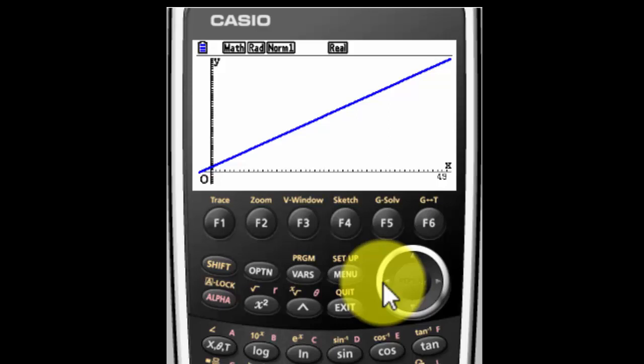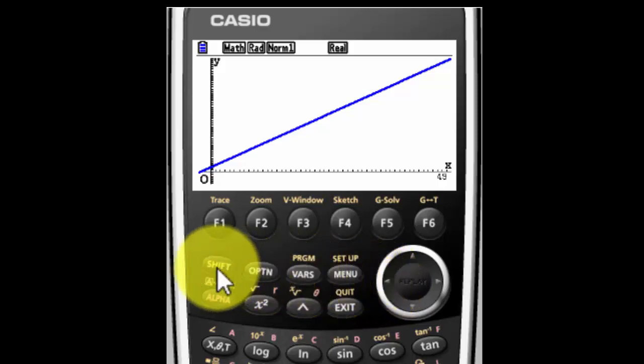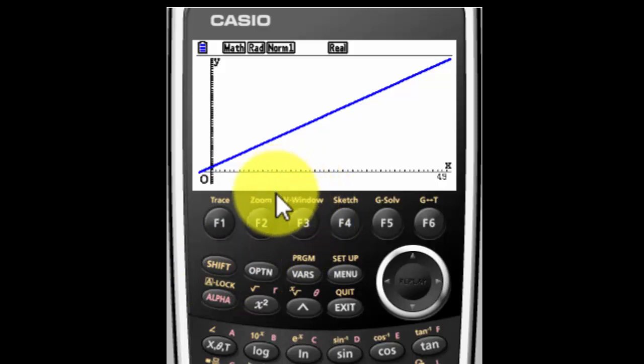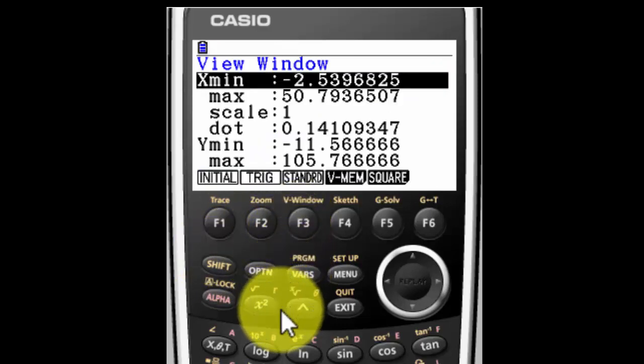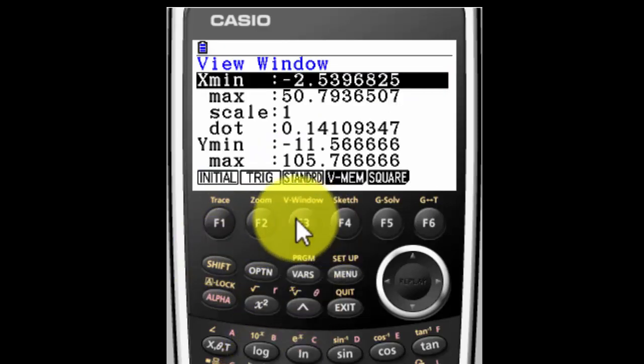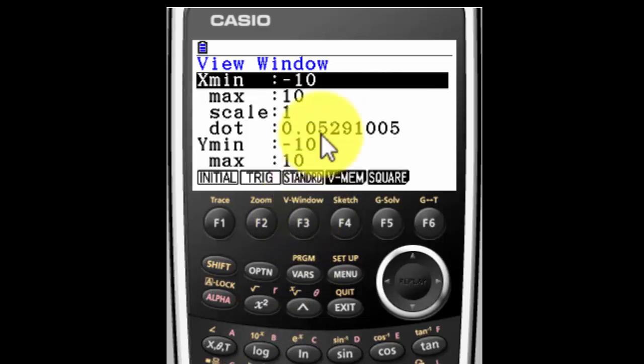So I'm going to change my view window. I'm going to press Shift and F3. Do you see above the F3 where it says V window and it's kind of in a yellowy brown? That means I have to hit the Shift key, my view window. I want the standard view. So I'm just going to hit standard. Standard is negative 10 to positive 10 with a scale of 1. So that looks good.